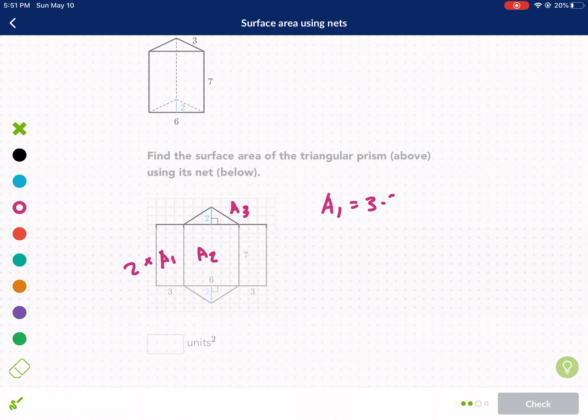A1 is a three by seven rectangle. So we just do three times seven. A2 is a six by seven rectangle. And then A3 is a triangle. So we're going to use one half base times the height for the triangle. We know the base is six. We know the height is two. So that gives us an area of six.